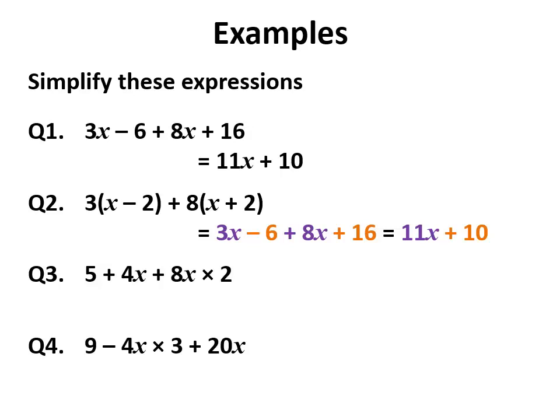And the third one: look at it, there's a multiplication in there, so we do that multiplication first. 8x times 2 is 16x. Then we have x terms and a number term. Well, we add the x terms and we leave the number term all by itself.